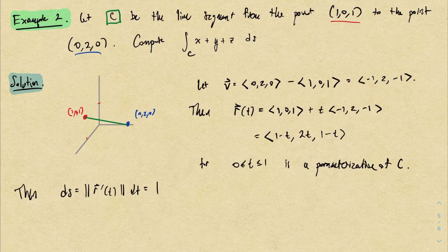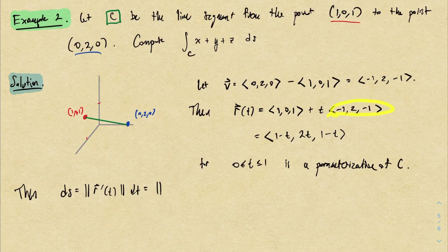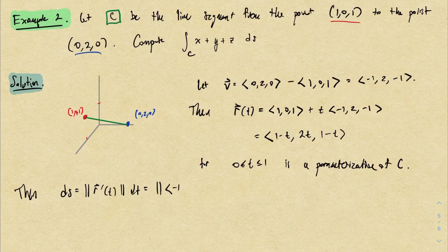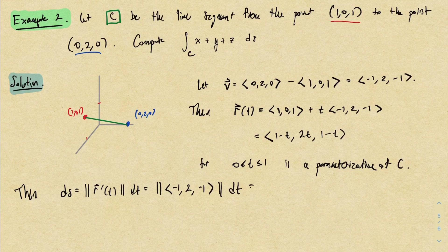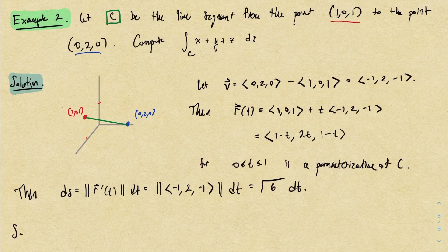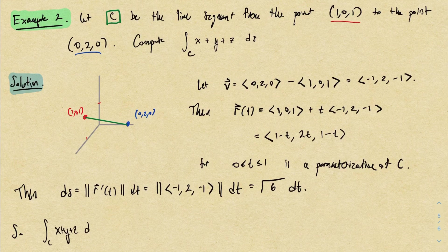DS in this case is going to be the norm of r prime. Well, r prime is going to be the direction vector. This is not surprising since we're parameterizing a line segment. So r prime here is <-1, 2, -1>. The magnitude of this is going to be the square root of 1 squared plus 2 squared plus 1 squared, which is 6, I think.